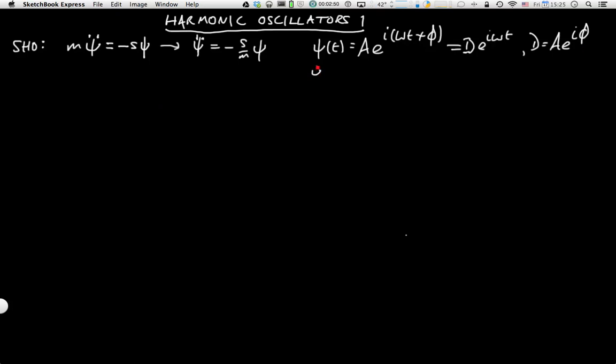If we take this and differentiate it, we have ψ̇, that's going to be iω D e^(iωt). If we differentiate it twice to get the acceleration, that is minus ω² D e^(iωt).